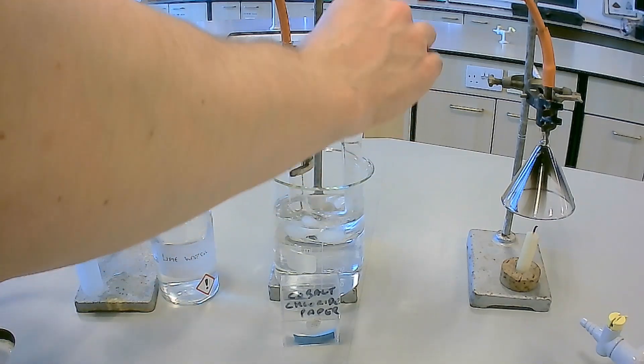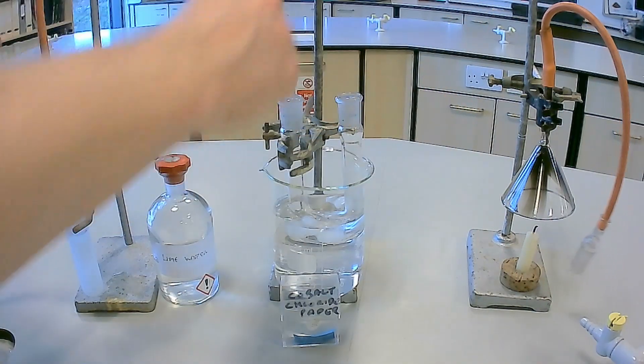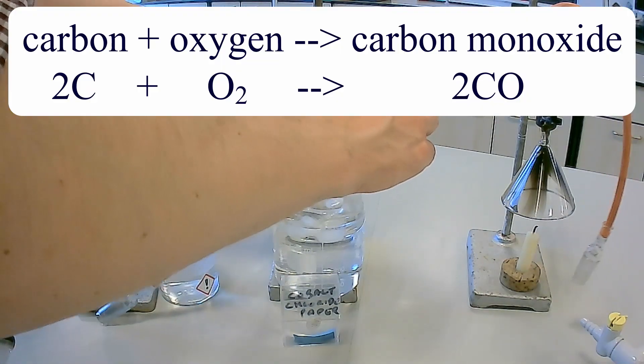Another product of incomplete combustion of carbon containing compounds is carbon monoxide. The equations for the production of carbon monoxide are shown on screen now.